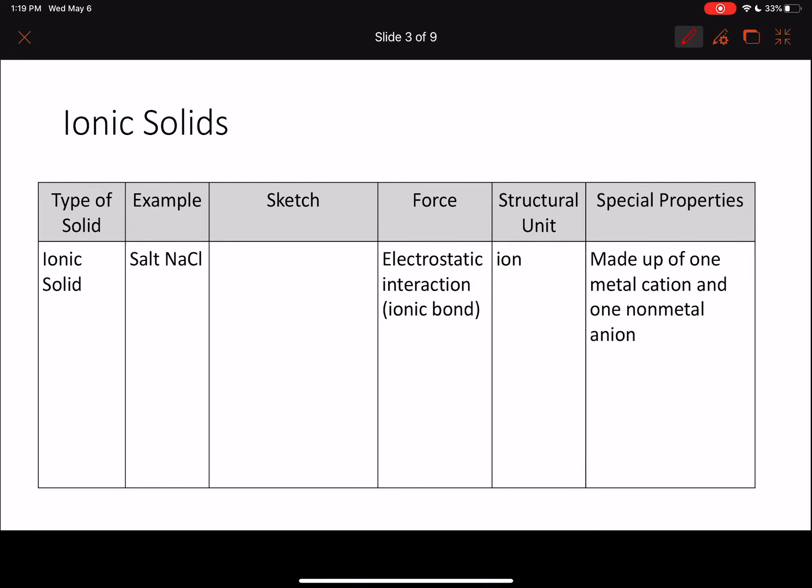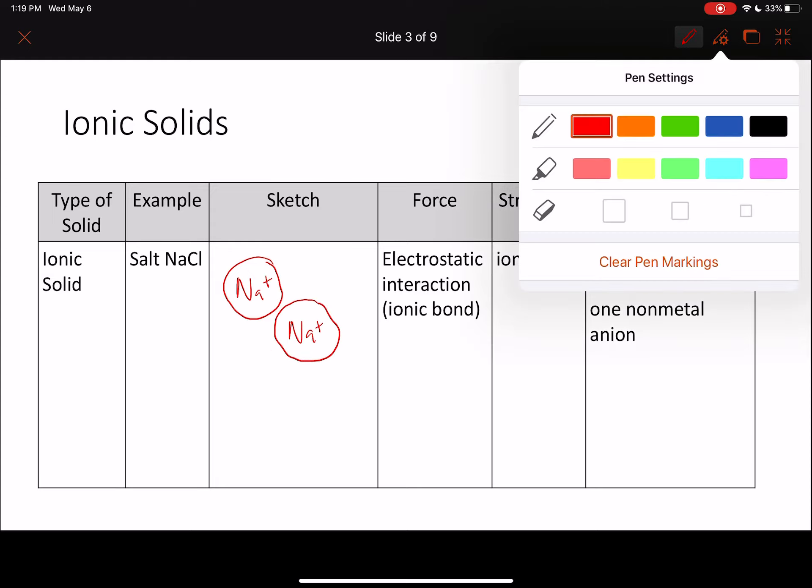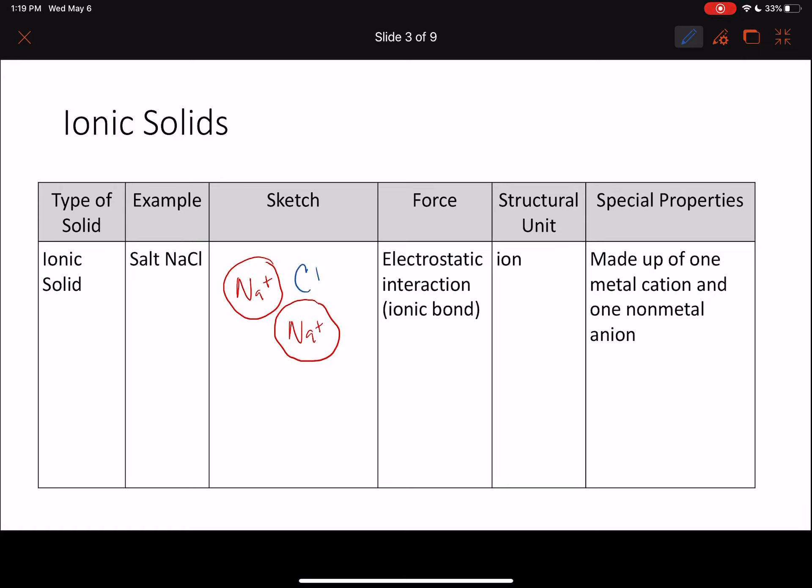Next we want to talk about ionic solids, and this is something you're already familiar with. An example would be salt, sodium chloride. In sodium chloride we would have our sodium ions, positive one, and then we would have our chlorine ions which are negative. They would be together so the positives are next to the negatives. We already know that the force that holds together an ionic solid is this electrostatic interaction, that attraction between the positive and the negative, and we call that an ionic bond.